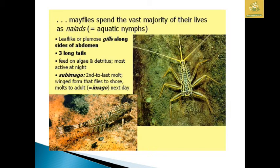They are aquatic nymphs. The structure is leaf-like with plumose gills present on both sides of the abdomen and three long tails at the end of the abdomen. They feed on algae and are mostly active at night. The subimago is the second-to-last winged form that flies to shore and molts to the adult imago the next day.